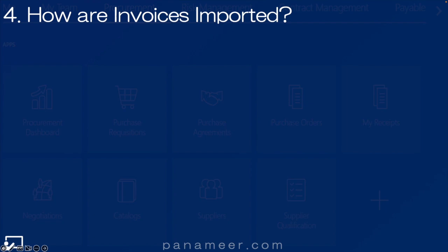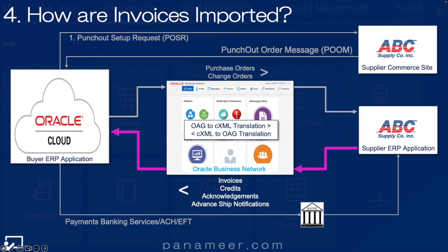Slide four: how are invoices imported? Here we use the buyer-supplier integration point of view. You can see on the left, Oracle Cloud punches out, goes to the supplier commerce site, comes back with an order message. We then get that requisition approved, it becomes a PO, goes through OBN, and now gets to the supplier ERP application. You can see it there on the right — a pink arrow going back into OBN. The supplier sends a cXML message back to Oracle Business Network, which converts or transforms it to OAG format and gives it to a staging table within Oracle Cloud.